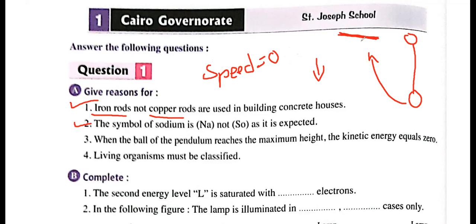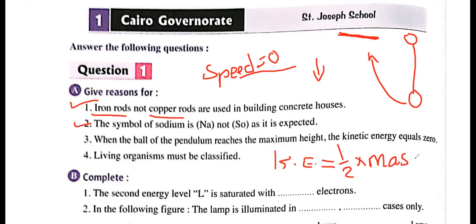At the maximum height, the speed equals zero. As the ball goes up, the speed keeps decreasing until we reach the maximum height where the speed equals zero. Since the speed equals zero, this makes the kinetic energy equal zero. We know that kinetic energy equals half times mass times velocity squared. When velocity equals zero, the kinetic energy equals zero as well. So: when a ball of a pendulum reaches the maximum height, the kinetic energy equals zero because the speed equals zero, and since KE = ½mv², KE equals zero.